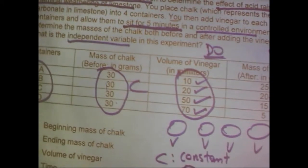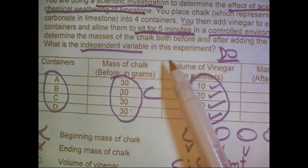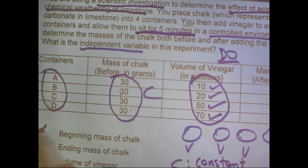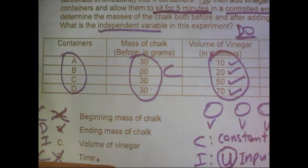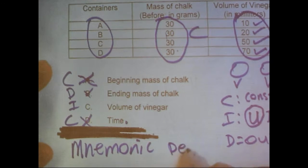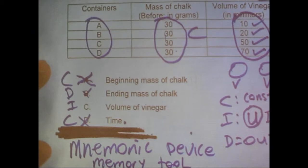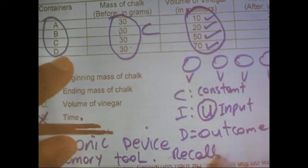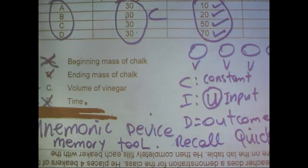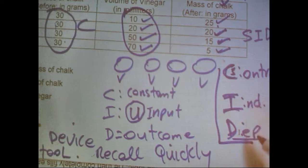Let's recap the strategy. When you do your question, use selective underlining — only underline what you need to pull out key information. Then label as you go, and cross out the answers that are definitely wrong. Use a mnemonic device — a memory tool that helps you recall quickly. Our mnemonic was SID: S for control, I for independent, and D for dependent variable.